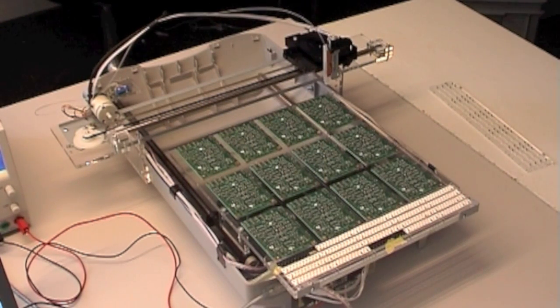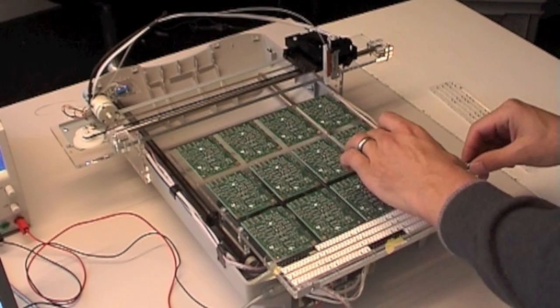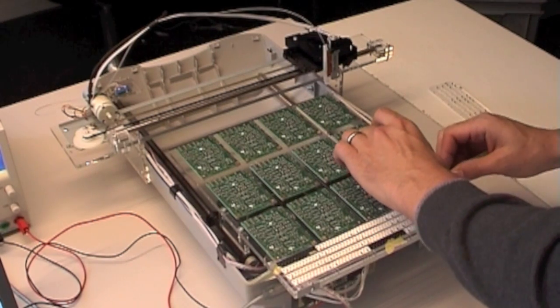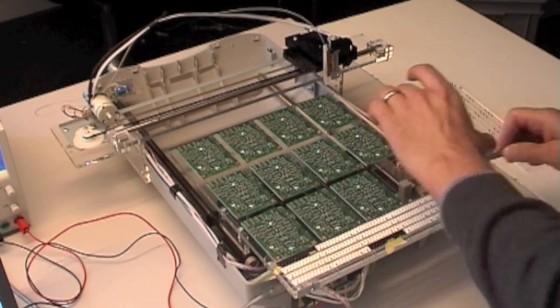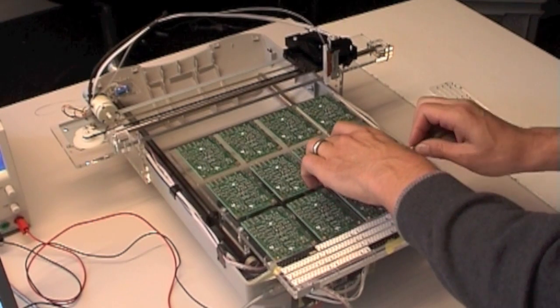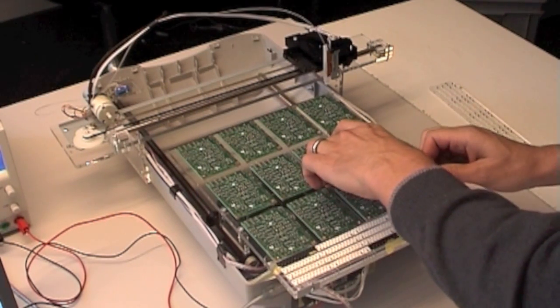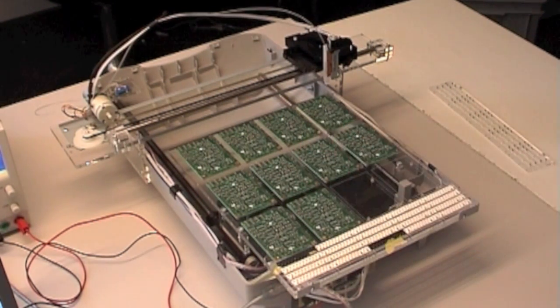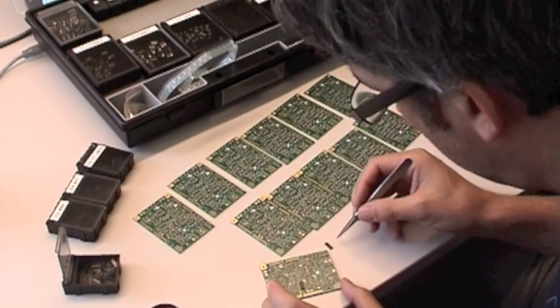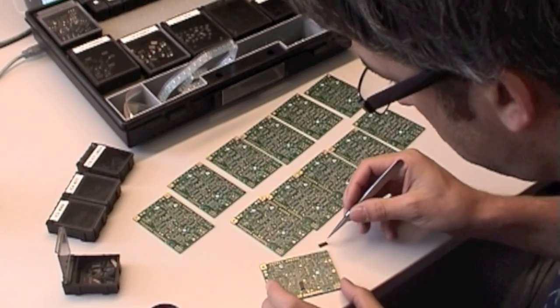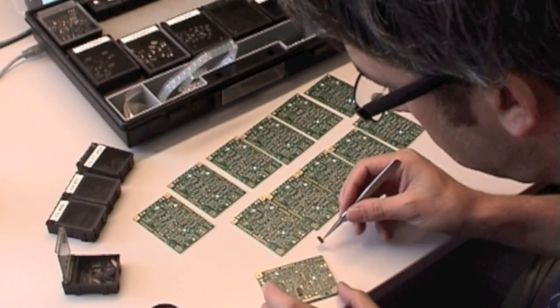Now that all small resistors, capacitors and even the LEDs are placed, I can take off the boards from the robot. I assemble the rest of the parts like integrated circuits, buttons or connectors by hand.